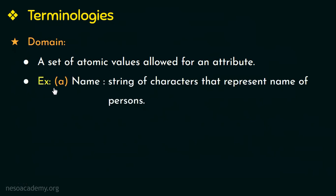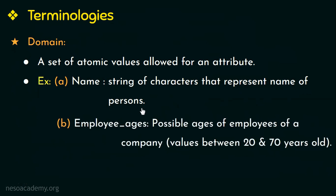For example, a set of values for the attribute name should be a string of characters that represent the name of persons, and the values have to be atomic. Another example is that the domain for the attribute employee ages would be a set of atomic values with possible ages of employees of a company allowed to be between 20 and 70 years old. Domain not only gives a set of values that are allowed for an attribute, it also specifies the data type allowed — for example, age has to be a positive integer.